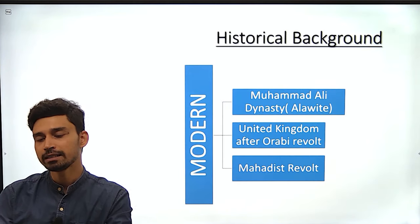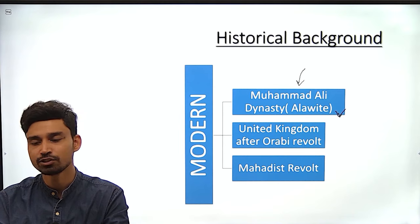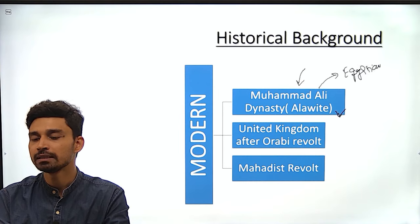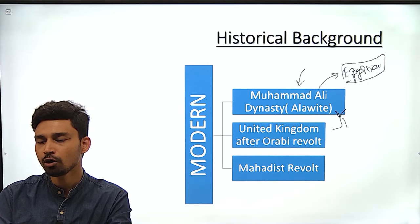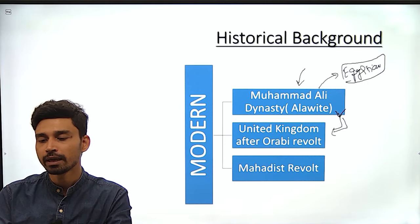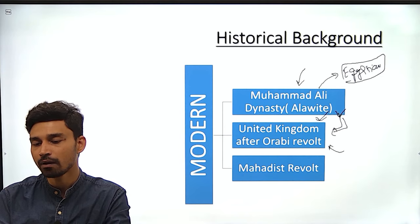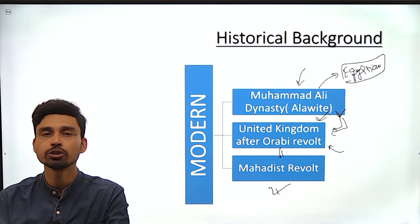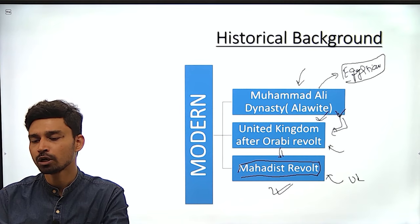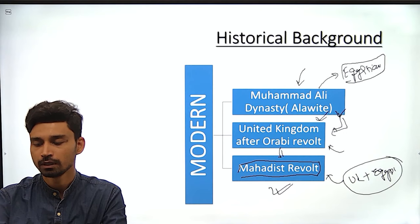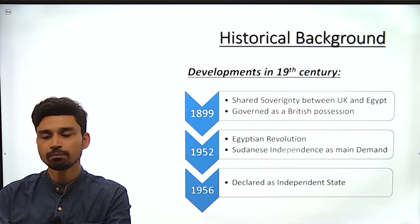Coming to the modern era, after the 19th century, the first control of Sudan went to the Muhammad Ali dynasty — also called the Alawi dynasty — an Egyptian dynasty. So in the beginning of the 19th century, Sudan again came under Egyptian control. Later, the United Kingdom showed interest and took control of Sudan after the Arabic revolt of local people against the Alawi dynasty. At the same time, there was the Mahadist revolt, which was however crushed by the combined forces of the UK and Egypt.